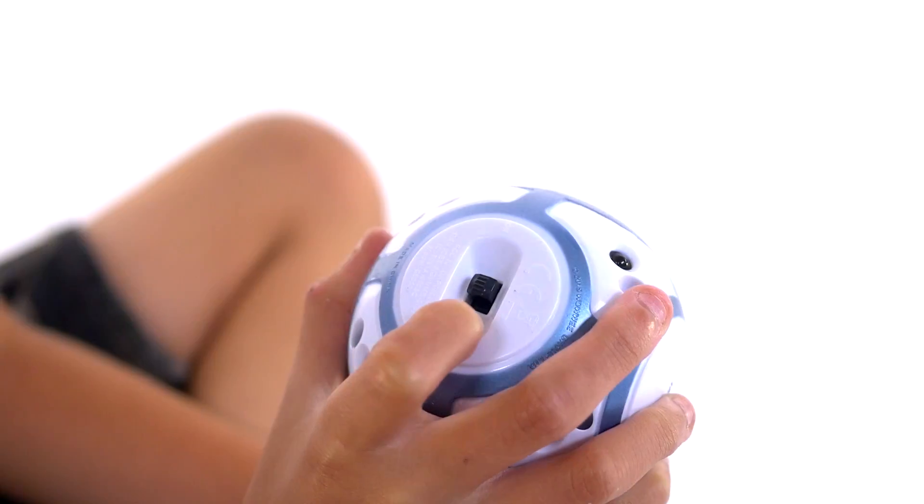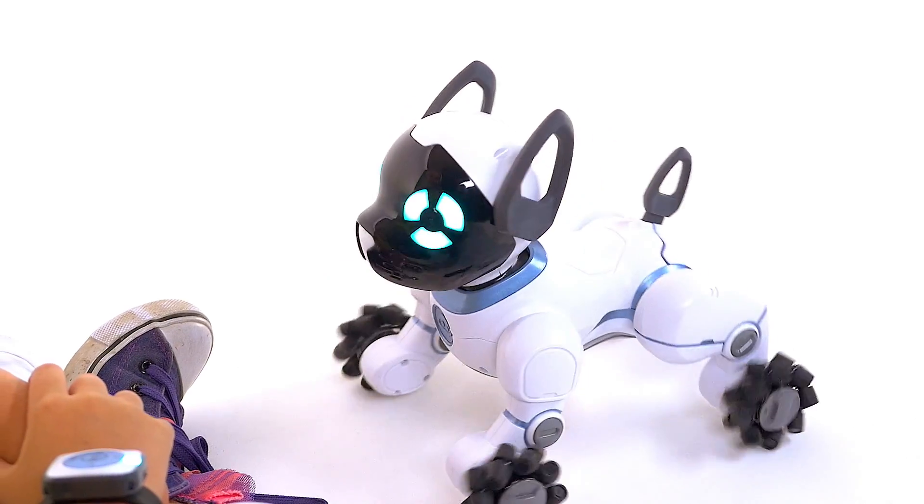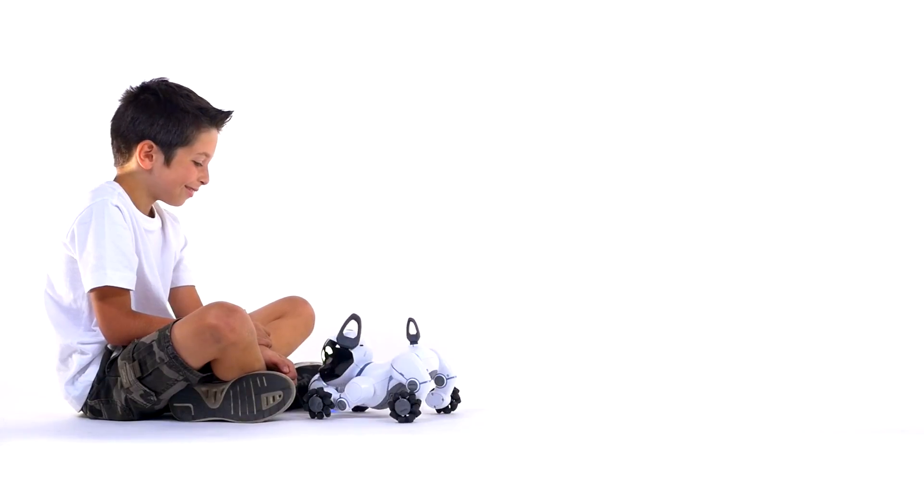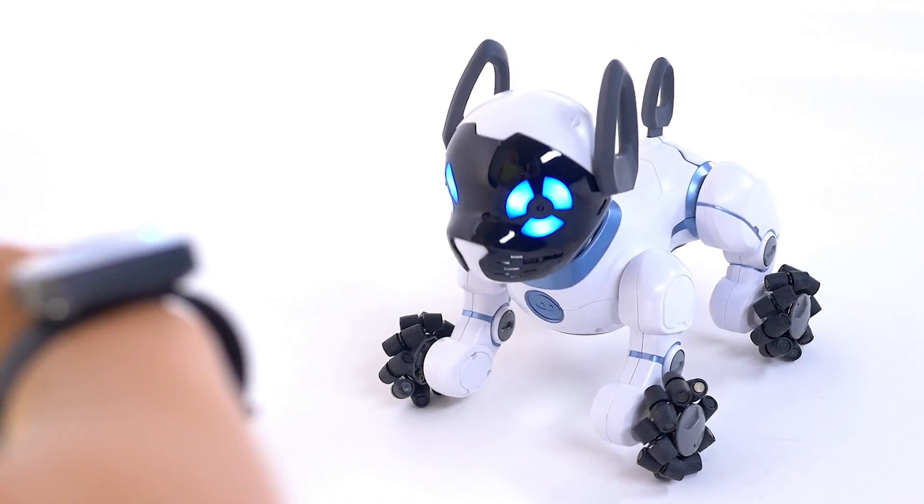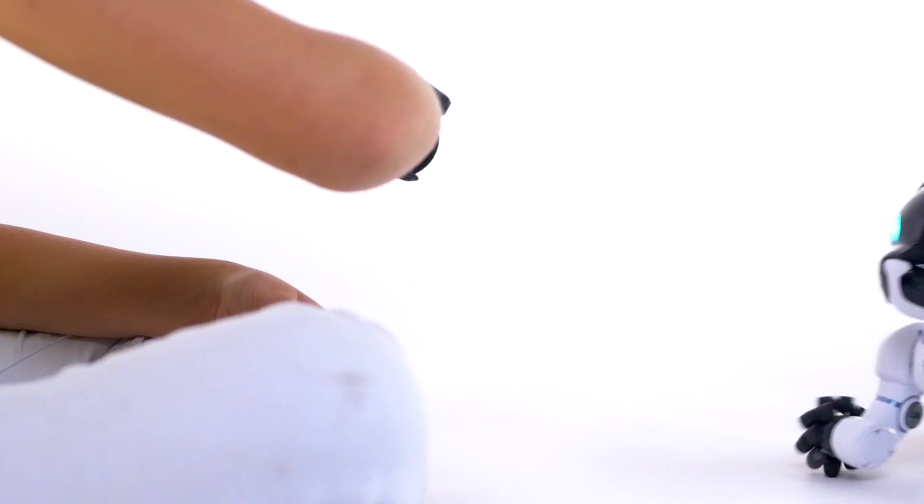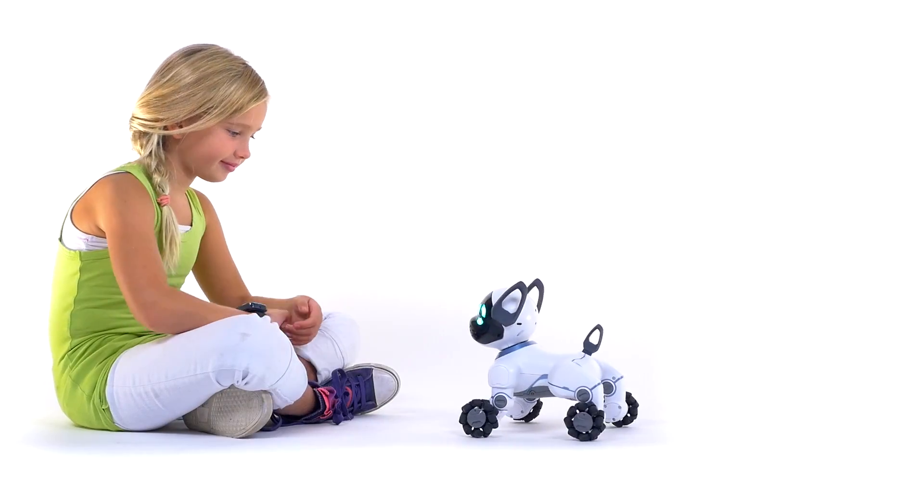When you activate any of the accessories for the first time, Chip will stop whatever he's doing and pay close attention to that accessory. When you wear your smart band, you and Chip are connected. Chip uses the band to understand where you are in relation to him. This is how he's able to find you.